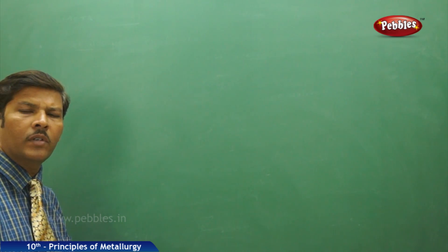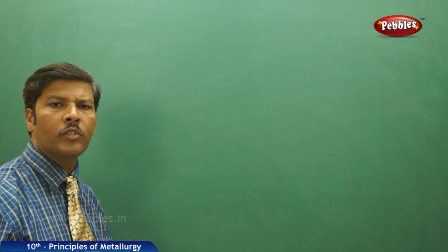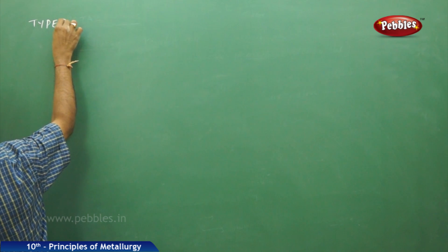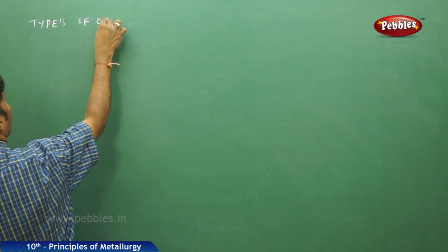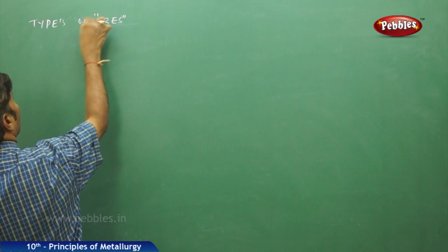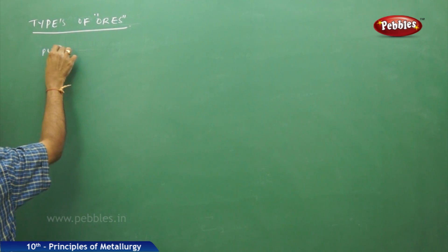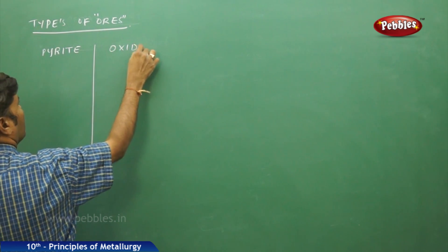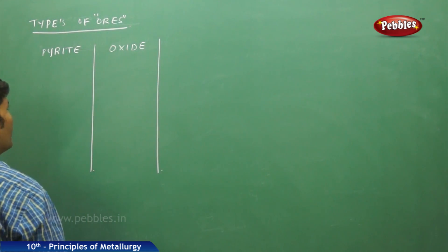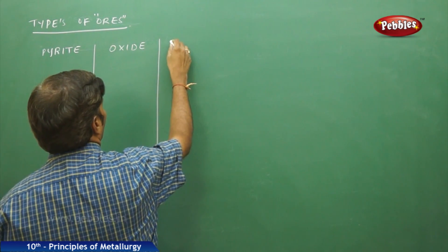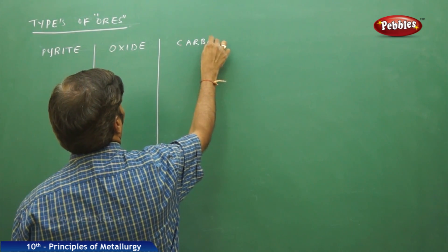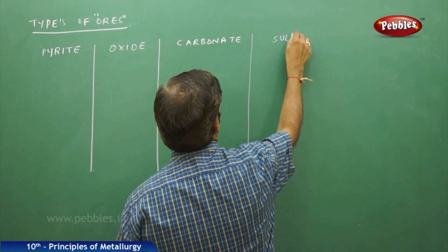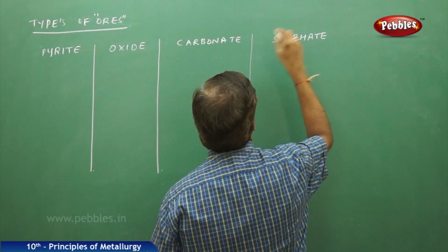We will now go through the different types of mineral ores, their chemical composition, and their metallurgical names. The main types are pyrite ores, oxide ores, carbonate ores, and sulphate ores.